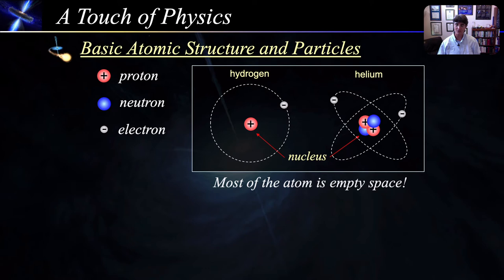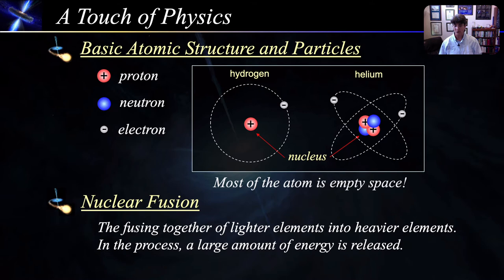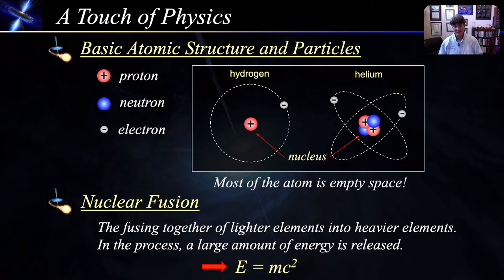And finally, nuclear fusion. Nuclear fusion is the fusing together of lighter elements into heavier ones, and in the process, a huge amount of energy is released. We can calculate the amount of energy using E equals mc squared. As we saw in the previous lecture, this tells us that a small amount of mass is equal to a very large amount of energy. Okay, that's it for physics. Amazingly, this is all the physics you need to have a qualitative understanding of black holes.